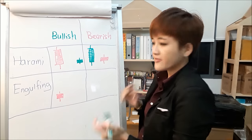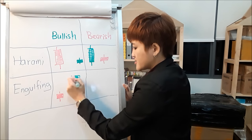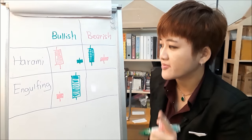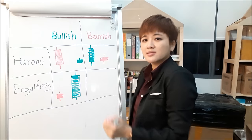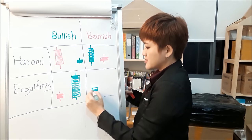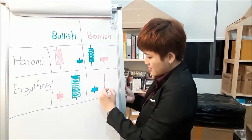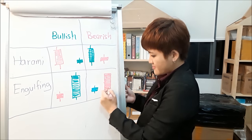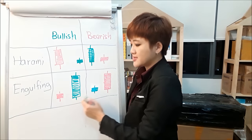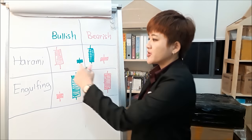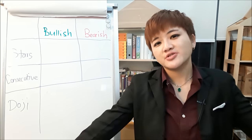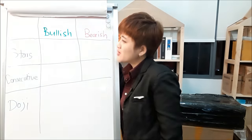The bullish engulfing pattern is the harami flipped: a small red candle followed by a large green candle. When you see this at the end of a downtrend or in a retracement, it signals price is going to go up. The bearish engulfing pattern is a small green candle followed by a big red candle, signaling price will go down. Again, the larger the difference the stronger the signal — ideally the small candle should be below the midpoint of the large candle.